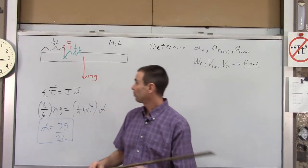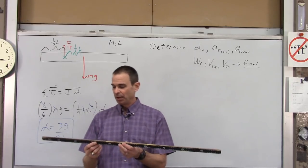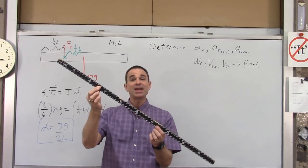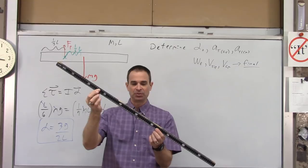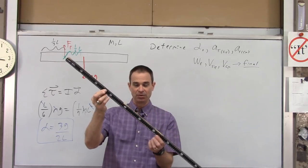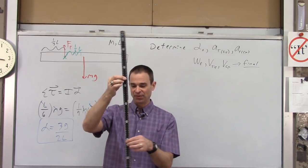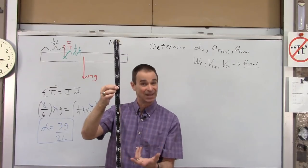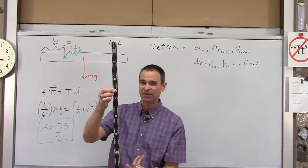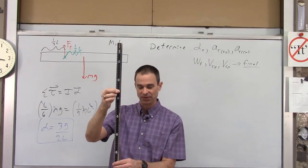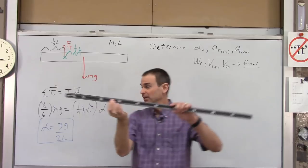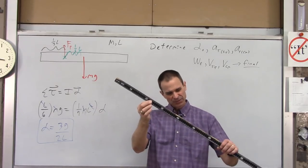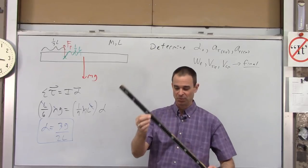A more complicated consideration is that as the rod swings, alpha changes — it varies with angle. For instance, when the rod swings through the very bottom of its arc, it stops accelerating; it has its maximum angular velocity at that point, so alpha is zero there. At release, alpha is 3G/2L. At the bottom, alpha is 0. At angles in between, you get values in between.